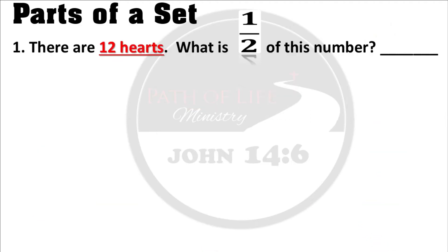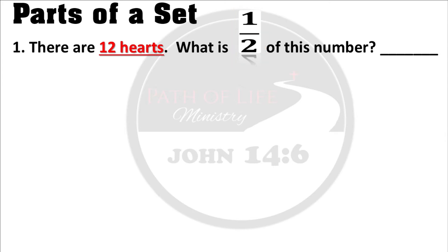The first thing I want you to do is to read the word problem: 'There are 12 hearts. What is half of this number?' The first step is to identify the fraction, and in this word problem the fraction is one half. Then we identify the whole number, which is 12 hearts.